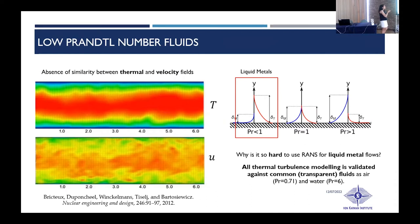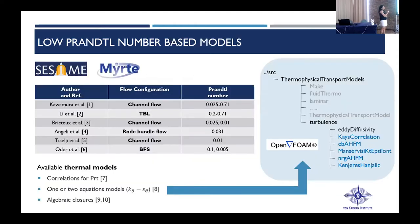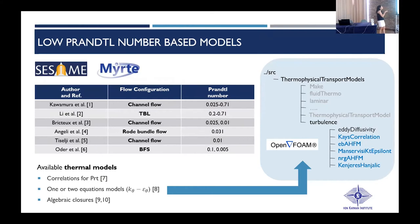Liquid metals are characterized by very low Prandtl numbers, which tend to break the similarity between thermal and velocity fields at the basis of most thermal turbulence closures. At low Prandtl numbers, the thermal boundary layer becomes thicker than the velocity one and the thermal coherence structures become larger than the momentum ones. The limitations of traditional modeling approaches led to several European collaborative projects, such as SESAME and LIT, aimed at gaining insight into liquid metal flows and improving modeling for this class of fluids.